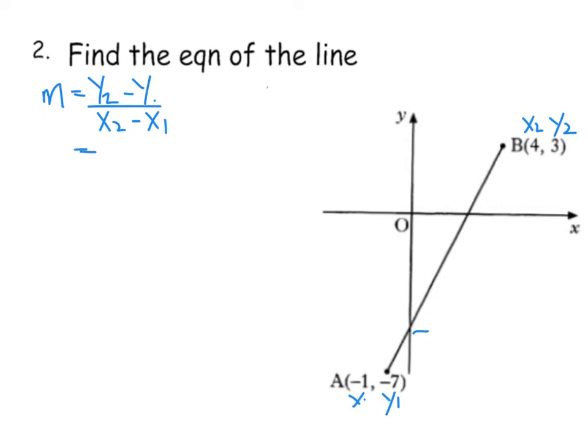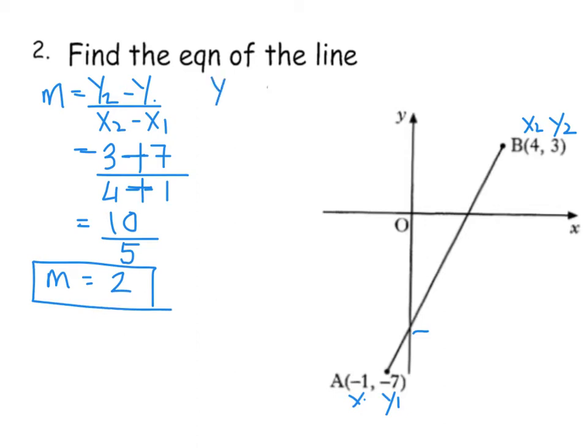So that will give us three minus minus seven all over four minus minus one. And double negative. So these two both turn into pluses. So we have three plus seven is ten. Four plus five. Four plus one is five, which gives us two again. Bad example on my part. Our gradient isn't always two, but we're going to go with it just now. So our gradient is two. Then we had to put that into the formula. y equals mx plus c. So y equals two x plus c.